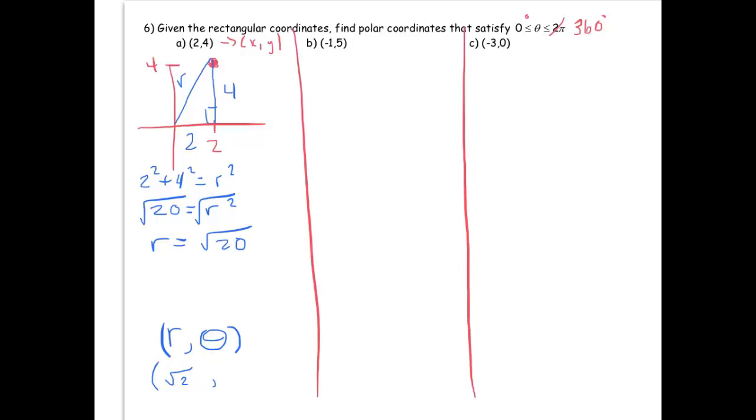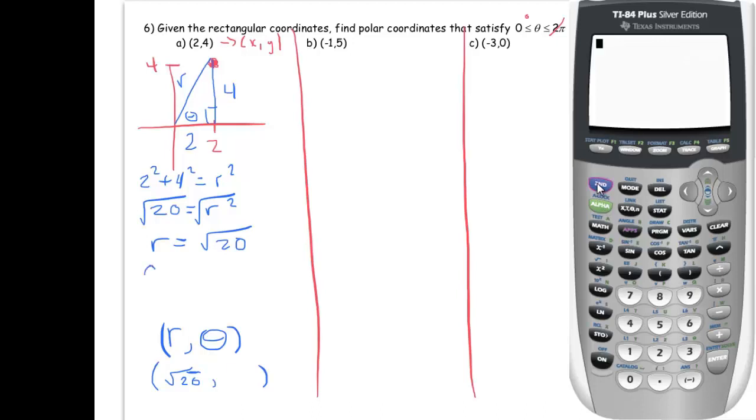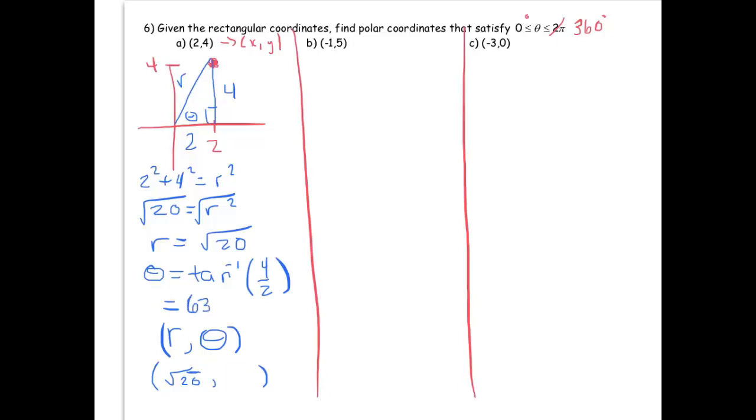And the only other thing now I've got to come up with is this angle. So again, my r here is square root of 20. I'll put that below. So the last thing I've got to come up with is my angle, and that's this here. So to come up with that, I make use of the fact that my angle is equal to tangent inverse of 4 divided by 2, which evaluated into the calculator gives me 63.435 degrees. So there is that point in polar form.